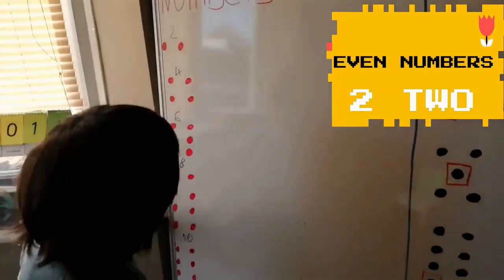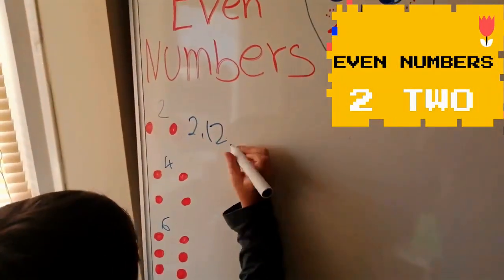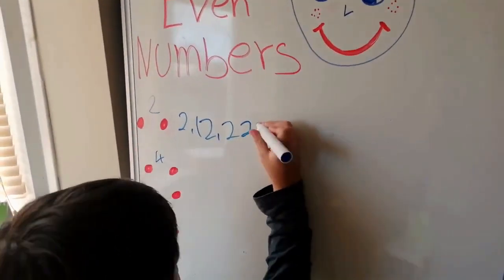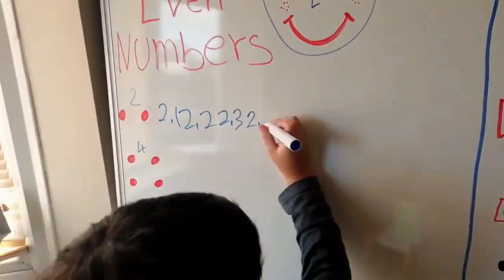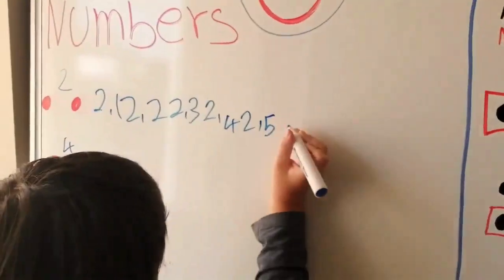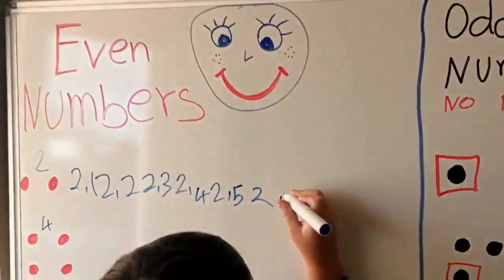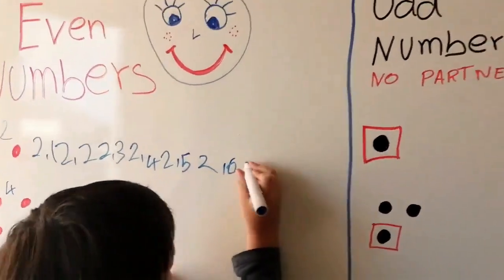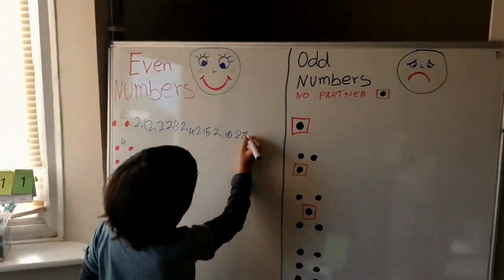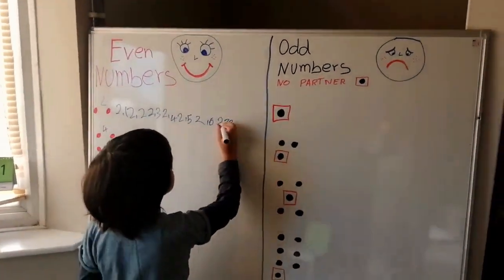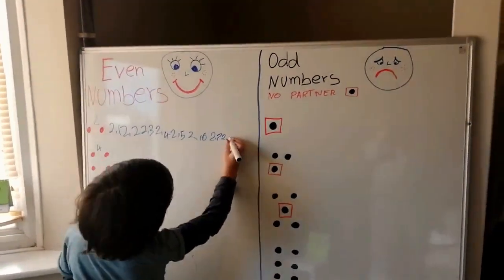Start with two: two, twelve, twenty-two, forty-two, fifty-two, sixty-two, seventy-two. Four, very good, eight, yeah.